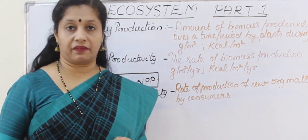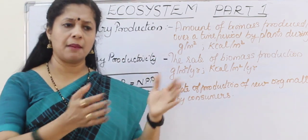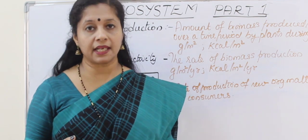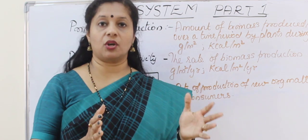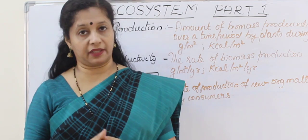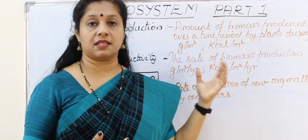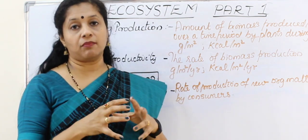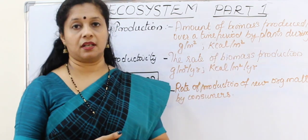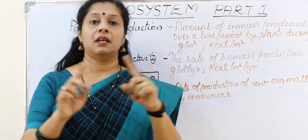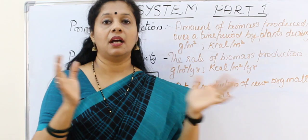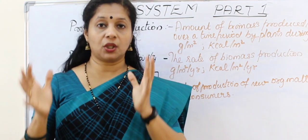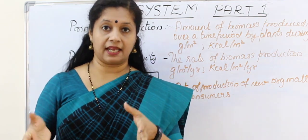We are going to study a few definitions. Mainly you have to remember primary production. Primary production means production of biomass or organic matter — that is carbohydrate. Plants are producing this. So the amount of biomass produced by the plants or the producers in a unit area during a particular period of time — this is represented using two methods. Either we can tell in terms of weight using the unit gram per meter square, or we can tell in terms of energy, kilocalorie per meter square. Suppose 10 meter square of a forest and 10 meter square of a desert — where will primary production be more? Of course in the forest because plants are more there.